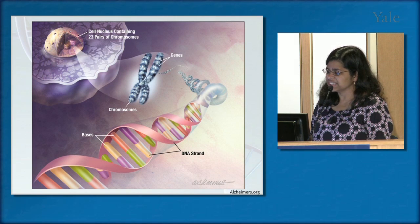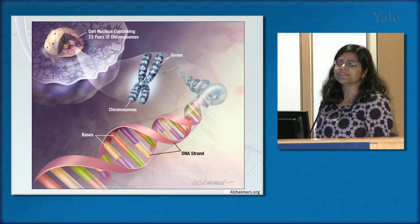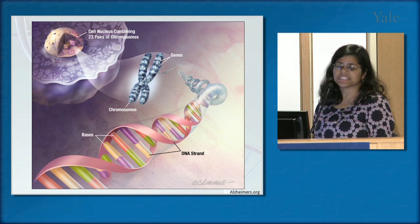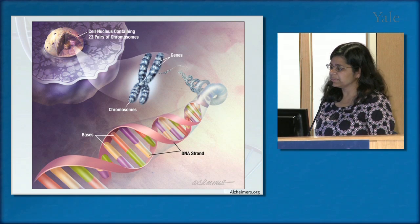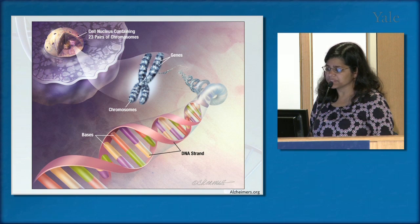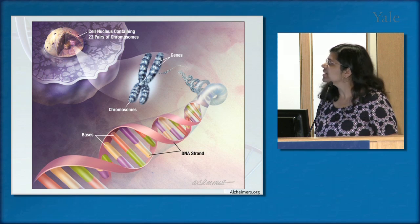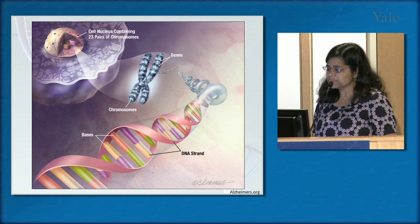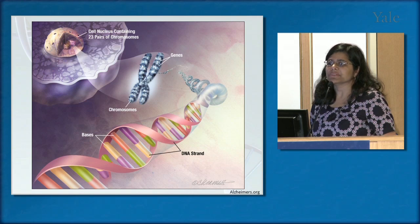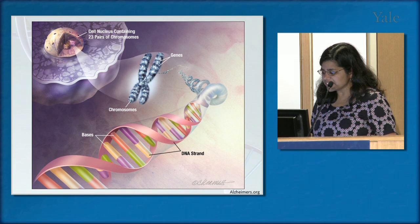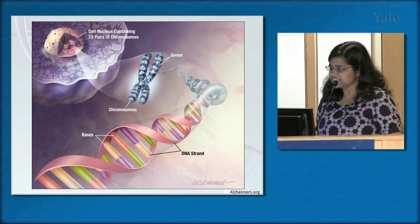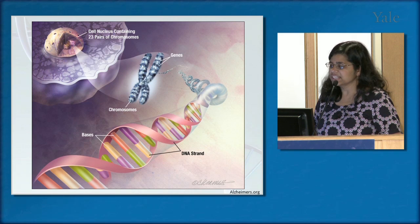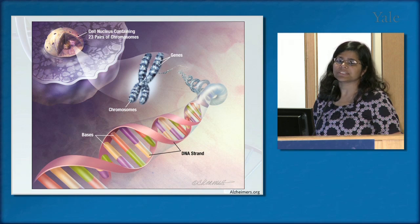I want to start off with some basic concepts in genetics before we delve into autism specifically. The nuclear compartment in most cells of our body contains our genetic material, packaged as 23 pairs of chromosomes — one set inherited maternally and the other paternally. These chromosomes are made up of the DNA double helix, which looks like a ladder. The rungs are made up of nucleotides — bases that pair up in a specific way. Stretches of DNA make up genes, which encode for proteins that make up our bodies. The specific sequence of these bases codes for the sequence of amino acids in those proteins.